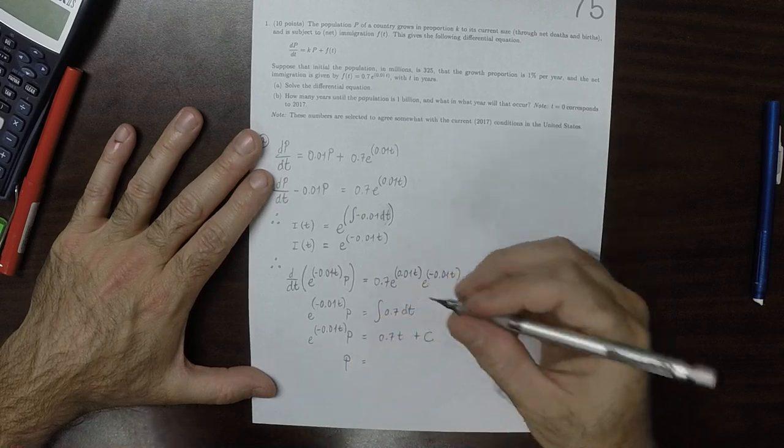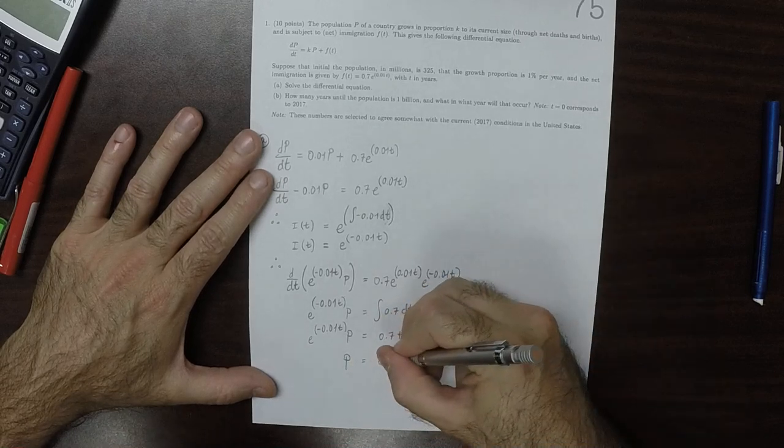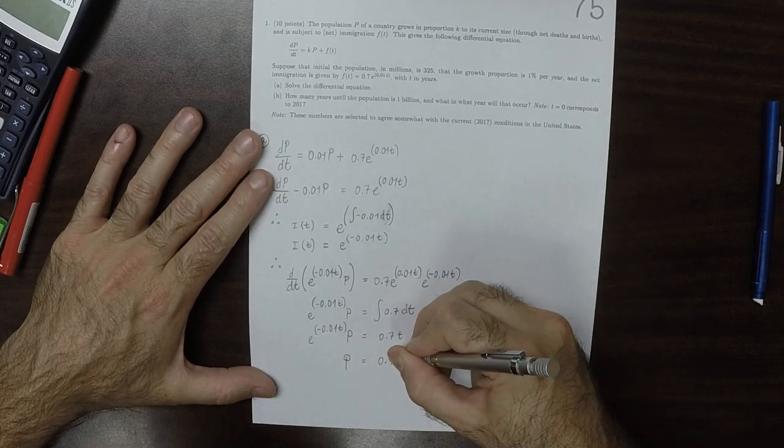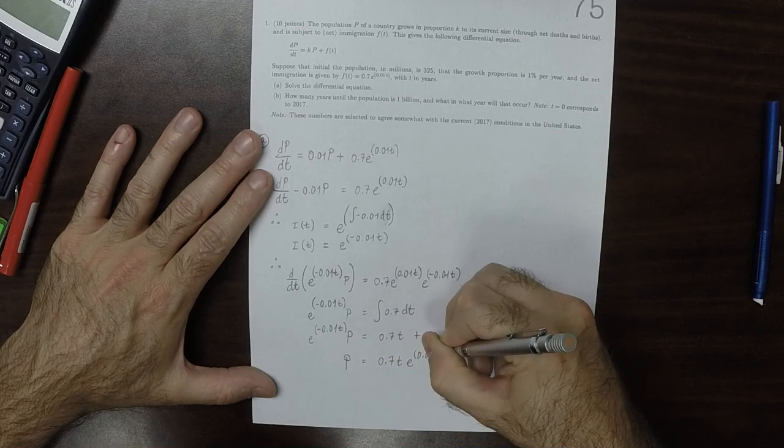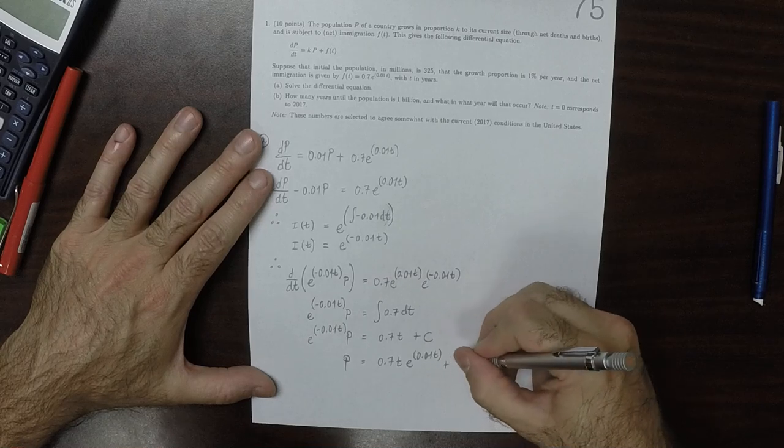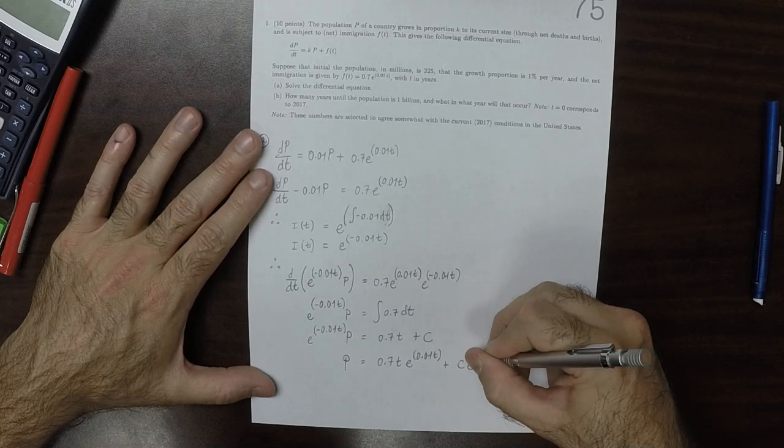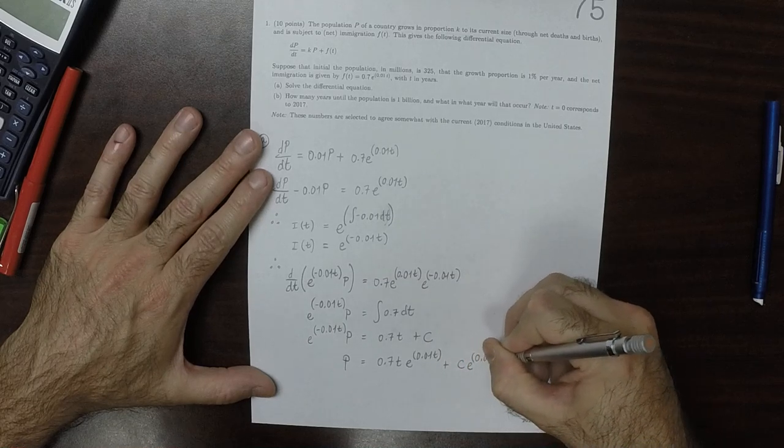And so p is 0.7t times e^(0.01t) plus c times e^(0.01t).